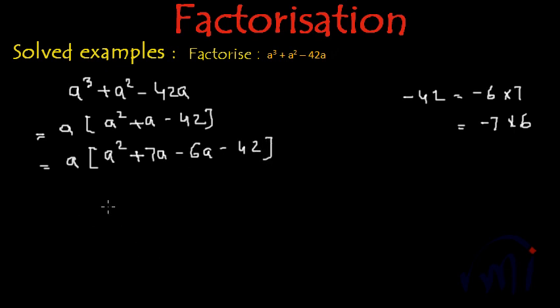And now again we can follow our normal procedure of pairing two terms each and taking something common if it is there. So 'a' will be written as it is and from these two terms I can take one more 'a' common and inside the bracket we will have a + 7.